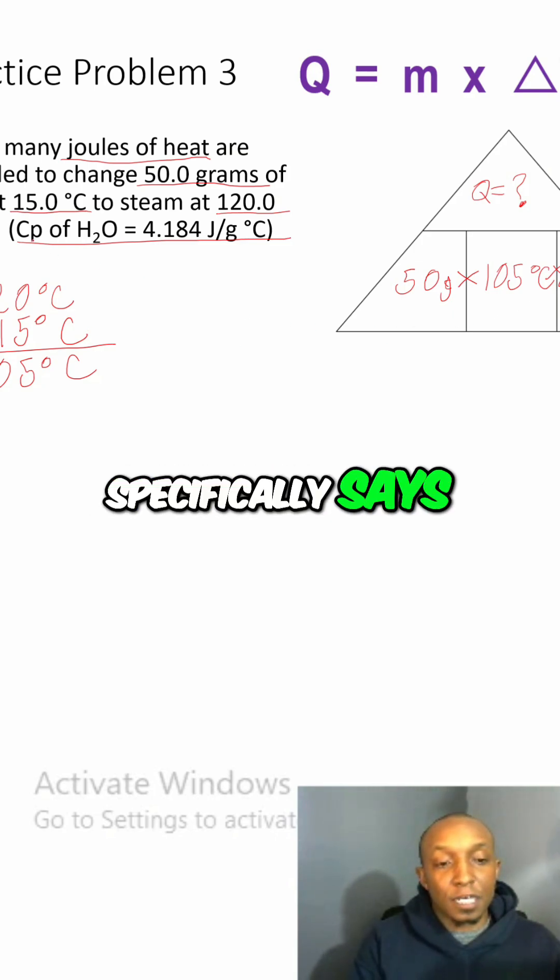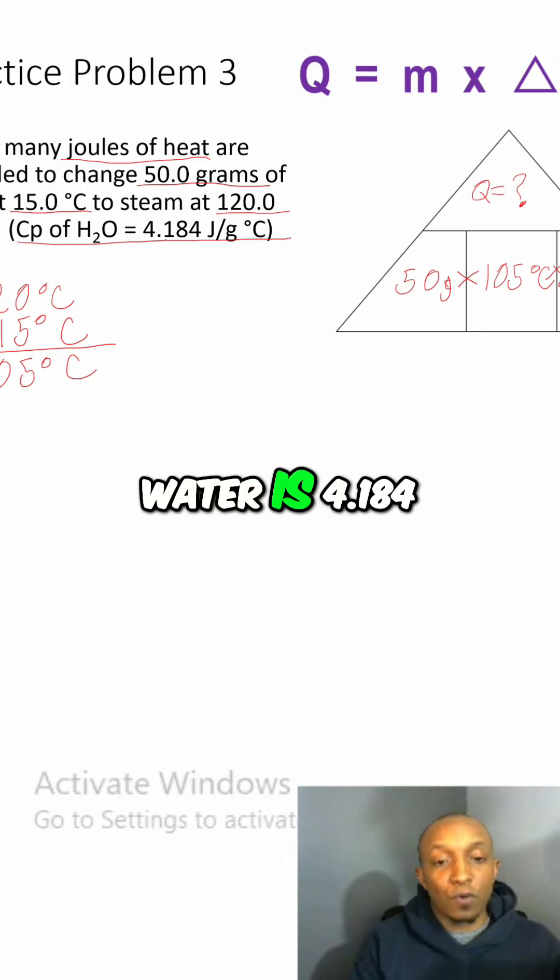And then it specifically says our specific heat of water is 4.184 joules per gram degrees Celsius.